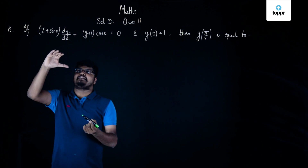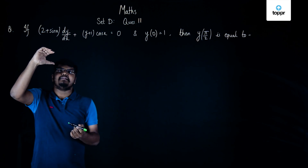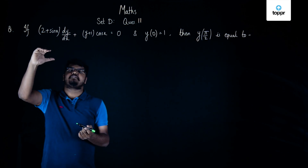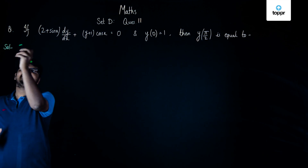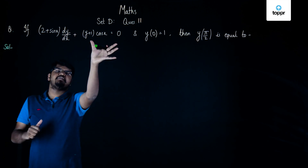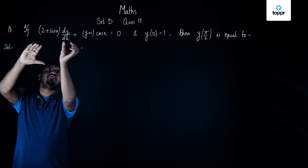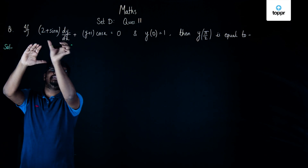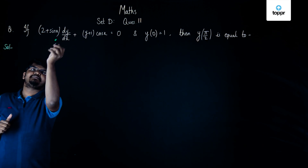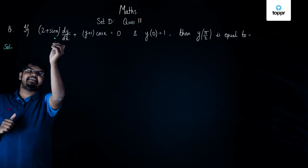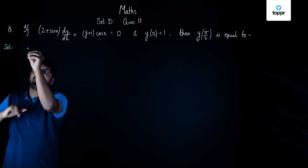We can see that this given differential equation is a first-order differential equation, and to convert it into its standard form, we'll have to make the coefficient of dy/dx equal to 1. So let's make the coefficient of dy/dx equal to 1 by taking (2 + sin x) as common.